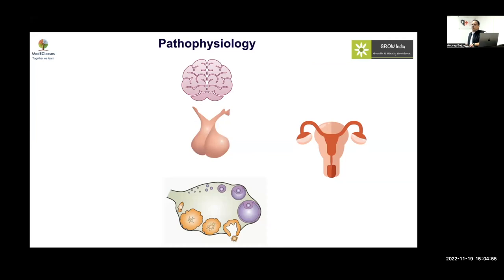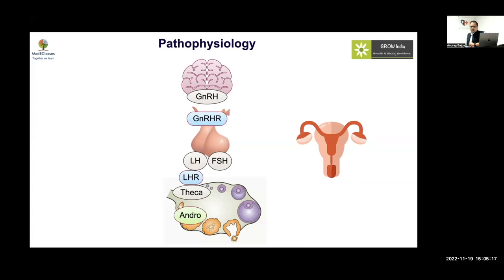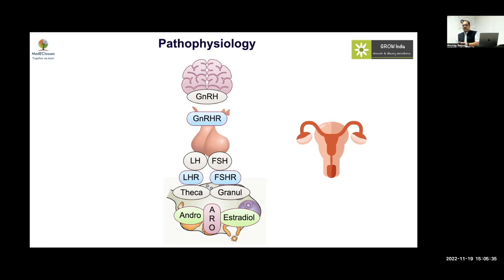Before the cases, we need a touch base on the pathophysiology of primary amenorrhea. Four organs play a role: the hypothalamus, pituitary as a unit, the ovaries, and the uterus — all working in tandem to ensure menstruation. GnRH is the primary regulator of gonadotropins. LH acts on the LH receptor on the theca cells to produce androstenedione, while FSH acts on the granulosa cells to produce aromatase and estradiol.